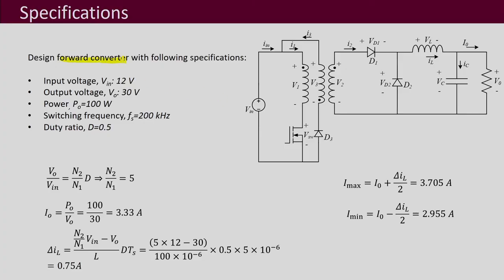The example is chosen for a forward converter — an isolated DC-to-DC converter where you have a primary and secondary, and another winding called the tertiary or demagnetizing winding. The specifications given are: input voltage 12 V, output voltage 30 V, power rating 100 W (peak power), switching frequency 200 kHz, and duty ratio 0.5.